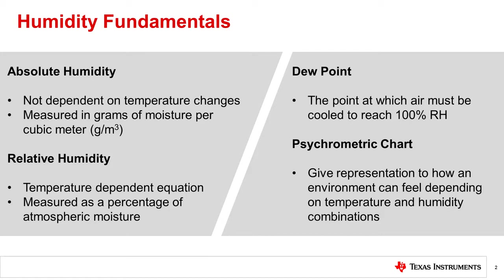When temperatures are frigid, the atmosphere isn't able to retain much water, and the inverse is true as temperatures increase. Dew point is a temperature that represents the point at which air must be cooled for condensation to occur. The psychometric chart is widely used in our industry to visualize what combinations of temperature and humidity create a comfort zone for humans. Among all the options for representing humidity, the majority of humidity sensors output relative humidity, since the environments in which they are used are ever-changing and there is always a need to track the combination of temperature and humidity.